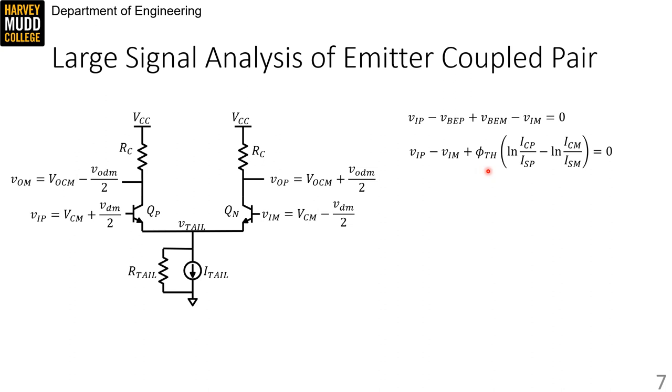And we know from our work with references that we can represent these VBE values with the inverse of the BJT equation. So represent them as a natural log of IC over IS for each transistor multiplied by phi_T. Combining the logs and assuming the IS values of the transistors match gives us this natural log on the right side of the equation. And combining VIP and VIM into VDM, since that's the differential mode input, gives us VDM on the left side of the equation.